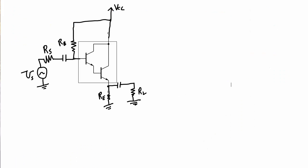Here is a common collector amplifier that uses a Darlington transistor instead of a single NPN transistor. To start off with, let's look at the DC analysis of this particular circuit.